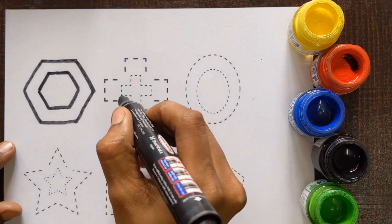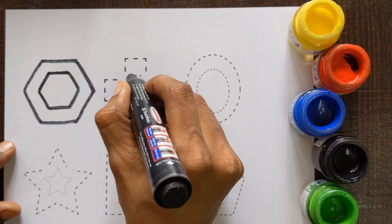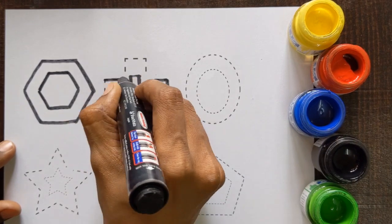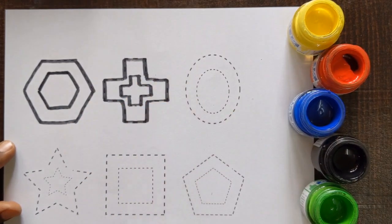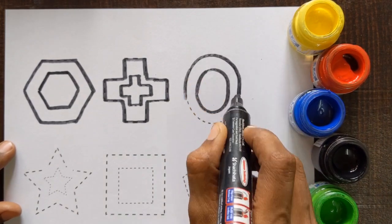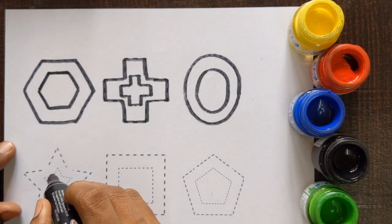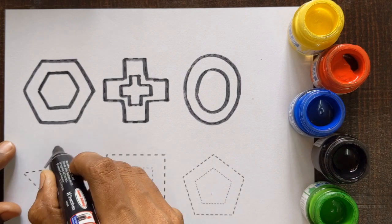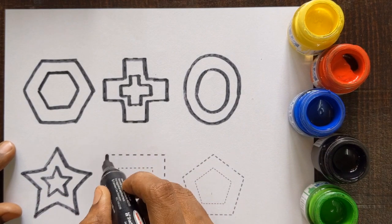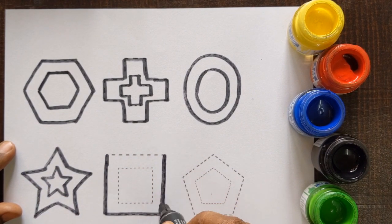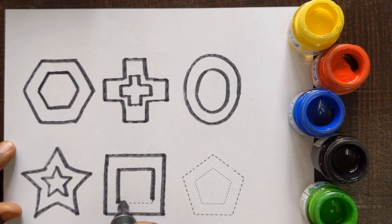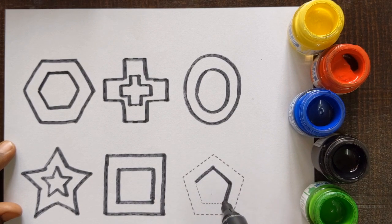Hexagon. Which shape is this? Hexagon. This is cross. Oval. Star. Square. Which shape is this, kids? This is square. And pentagon.